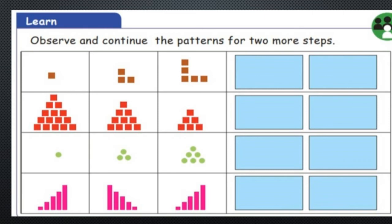Now we will see the third one: 1, 3, and 6. It is increasing. So 6 plus 3 is 9, and 9 plus 4 is 13. Now we will see the last sum — the pattern goes from smaller to bigger, then bigger to smaller, then small to big. Next will be big to small, and the last one is small to bigger.